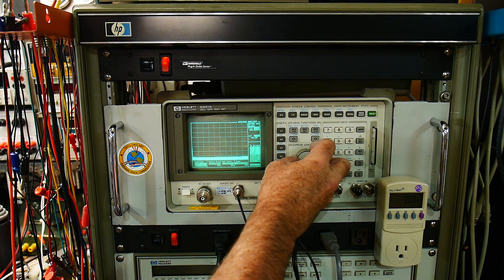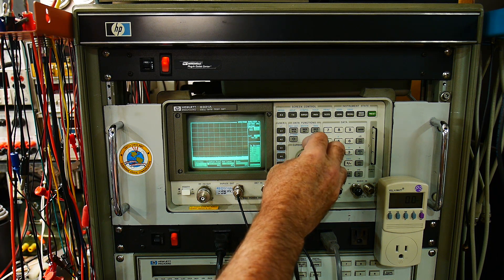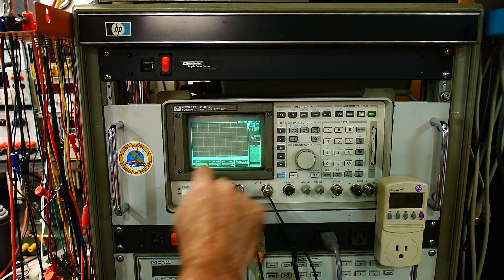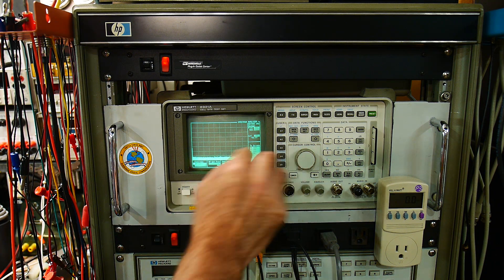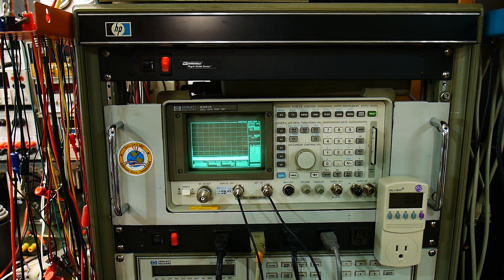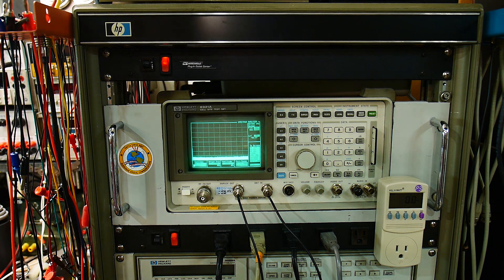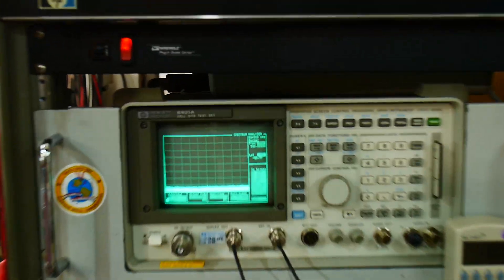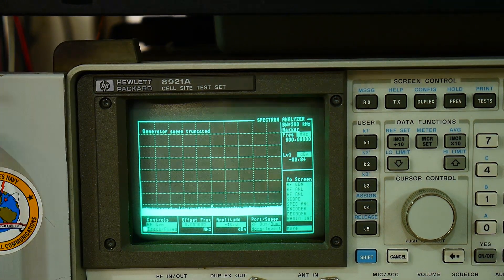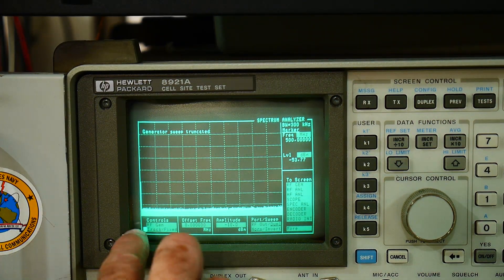The next thing we need to do is go here to control, say main, and we'll go to the RF generator. It says tracking or fixed. It's set to fixed right now, so we'll say track. You guys can't really see that, can you? OK, I'll go to track.